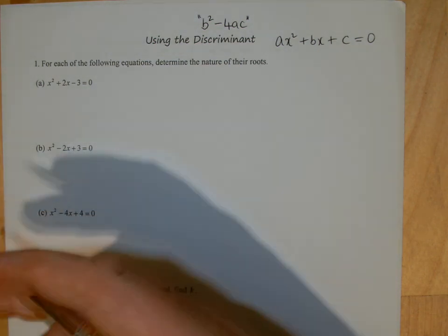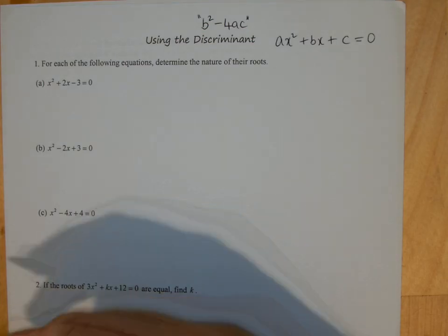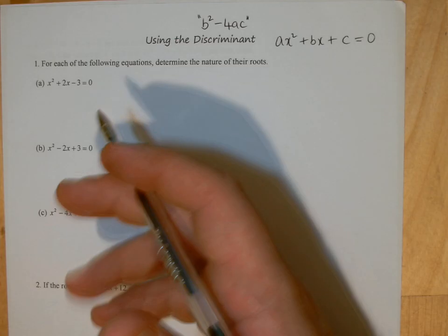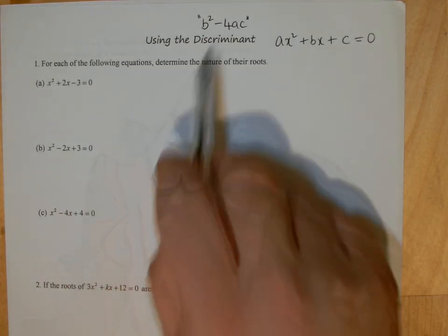Whether it's got two real and distinct roots, whether it's got one root or repeated root, or whether it's got no real roots at all, just by looking at the value of the discriminant.